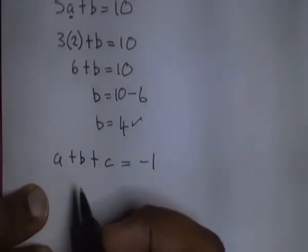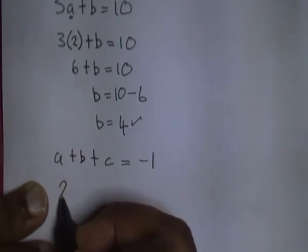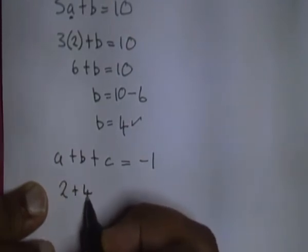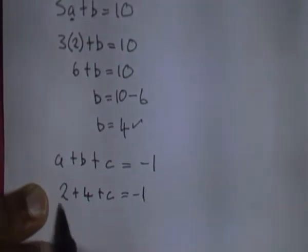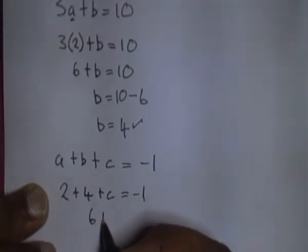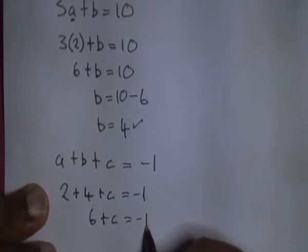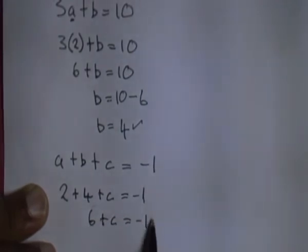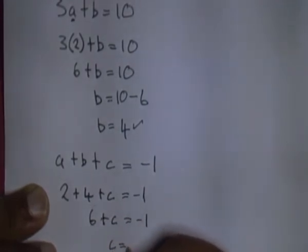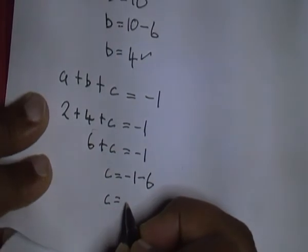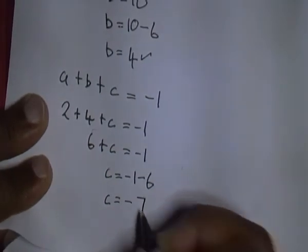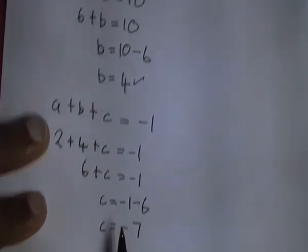2 plus 4, we know that is 6, plus C, which is equal to -1. Take the 6 over, so it's going to end up subtracting. -1 minus 6, which means C is equal to -7. So now we know what is A, we know what is B, we know what is C.